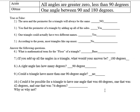Could it be possible for a triangle to have one angle that was 60 degrees, one that was 42 degrees, and one that was 74 degrees? Well, if I add up the three angles, I have to get 180 and I wouldn't, I get 176 there. So it's not possible because the angles don't add up to the correct amount.